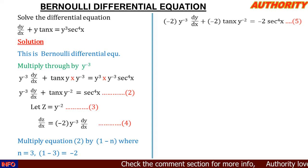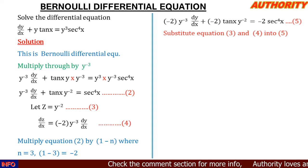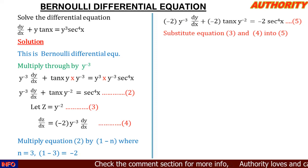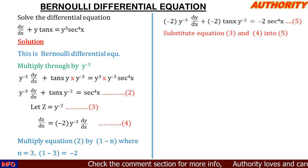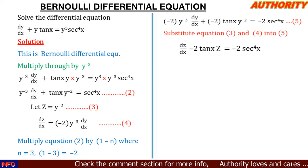Let's call this equation 5. Now we substitute equation 3 and equation 4 into equation 5. Wherever we see y^(-2), we replace it with z. And wherever we see minus 2 · y^(-3) · dy/dx, we replace it with dz/dx. Doing so, we obtain: dz/dx minus 2·tan(x)·z equals minus 2·sec^4(x).